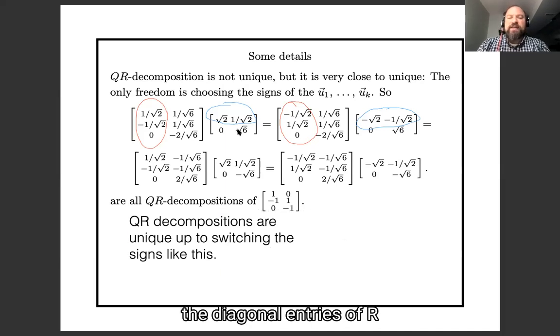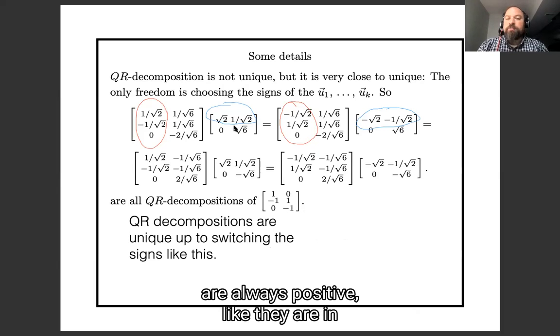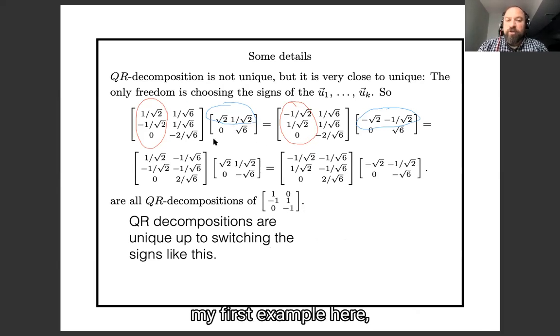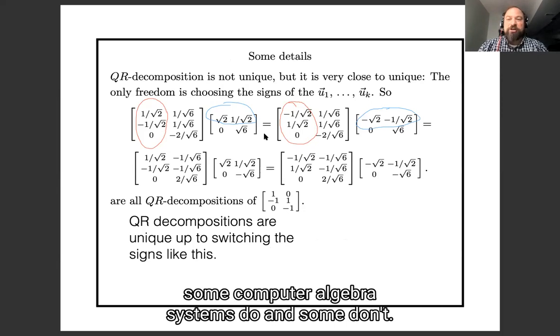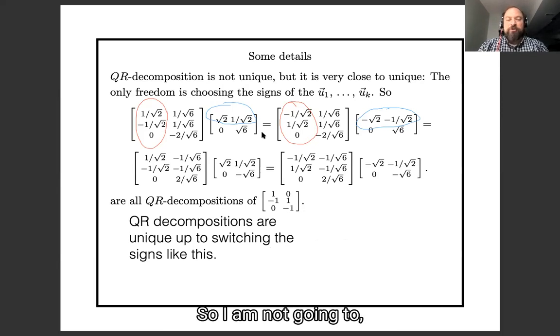Some people will normalize that the diagonal entries of R are always positive, like they are in my first example here. But your textbook doesn't do that, and as we will see later, some computer algebra systems do and some don't. So I am not going to. I'm going to say QR decompositions are unique up to signs.